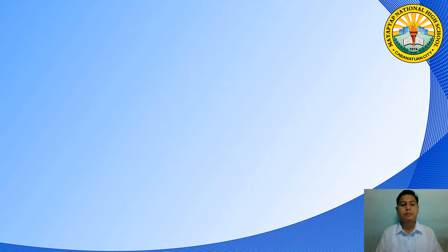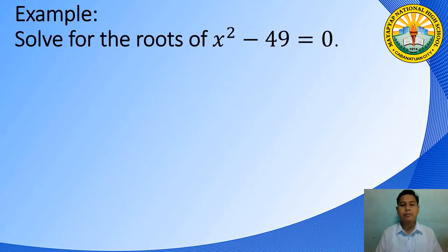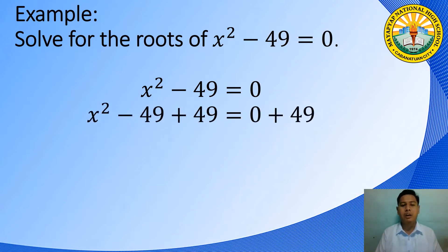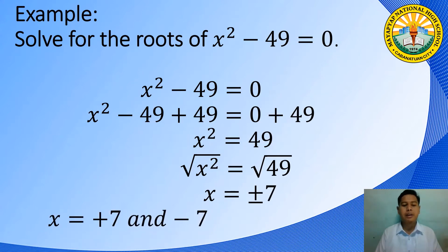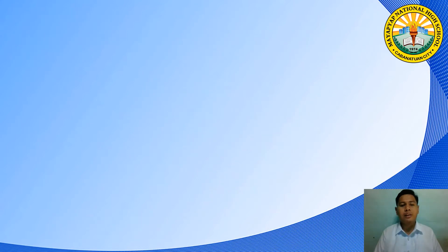Let's have an example. Solve for the roots of x squared minus 49 is equal to 0. The equation can be solved by first isolating x squared. Using the addition property of equality, the resulting equation becomes x squared is equal to 49. Taking the square root of both sides, we obtain x is equal to positive and negative 7. Therefore, the roots are positive 7 and negative 7.